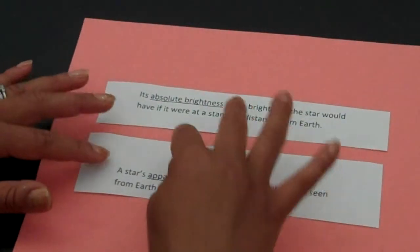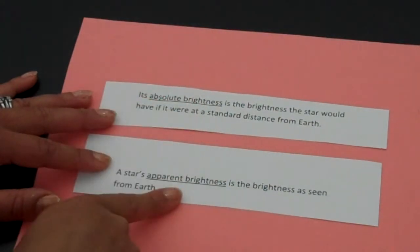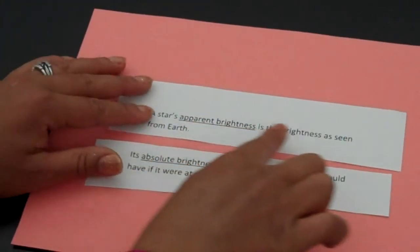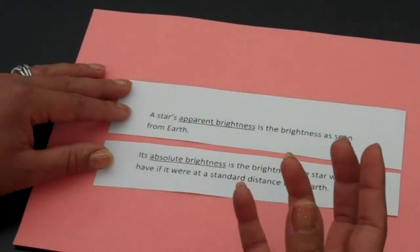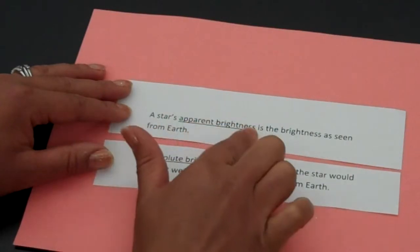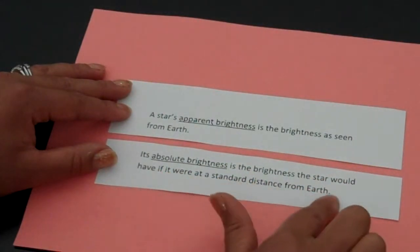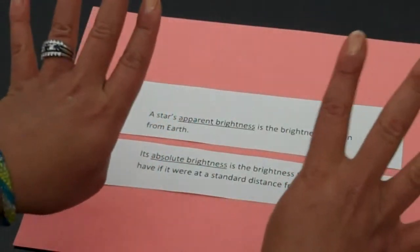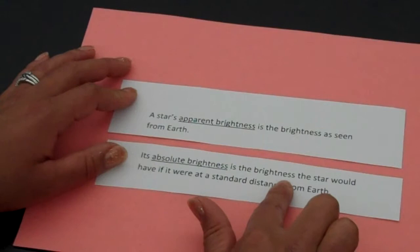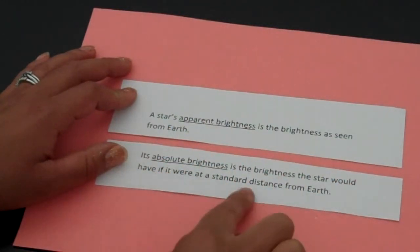There are two definitions we need to know, both having to do with brightness. The apparent brightness is what we see from Earth — how it looks to us. Stars might appear smaller and dim because of our perspective from Earth; that's apparent brightness. The absolute brightness is the brightness a star would have if it were at a standard distance from Earth. So if we lined up all the stars next to each other, we could compare their actual brightness — that's the absolute brightness. One is how it seems from Earth, and the other is the actual brightness that it is.